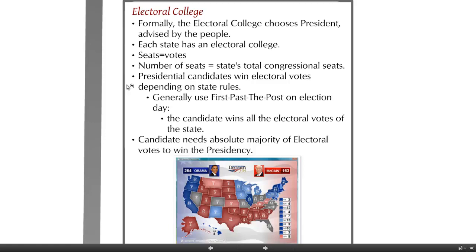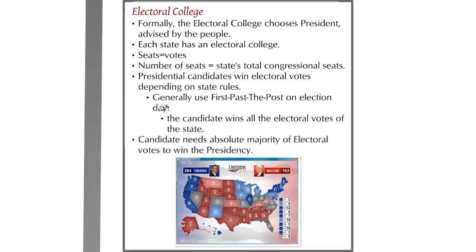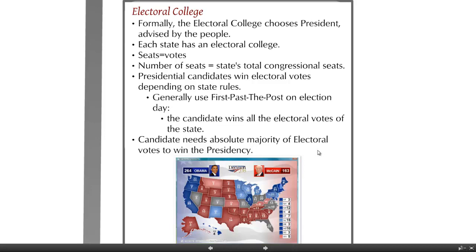Presidential candidates need electoral votes to win the presidency. Most states use a winner-take-all version: the candidate who wins the plurality of votes in a state gains all of that state's electoral votes. This is why you sometimes get results where one candidate wins the slight majority of the national popular vote, but the other candidate wins more electoral votes and thus becomes President.